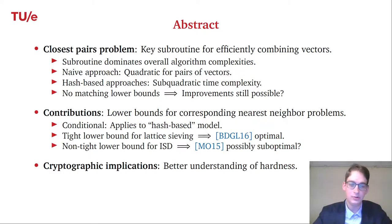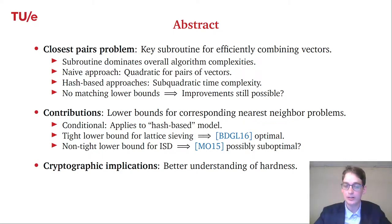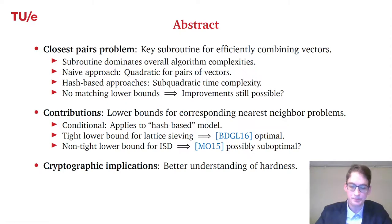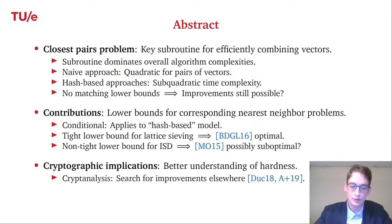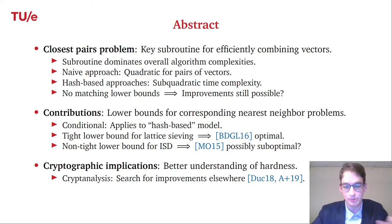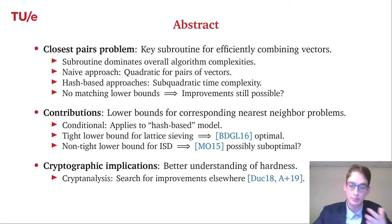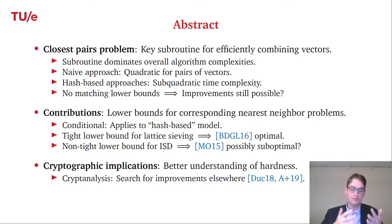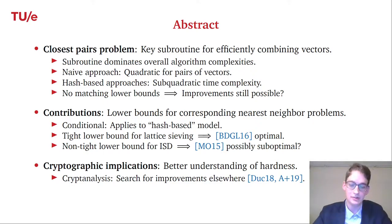The main implication of these results is a better understanding of the hardness of the underlying problems — the lattice problems and decoding problems. For cryptanalysts working on lattices, the takeaway is that you should search for improvements elsewhere, not in the nearest neighbor technique, since the lower bound now matches the upper bound in that part.